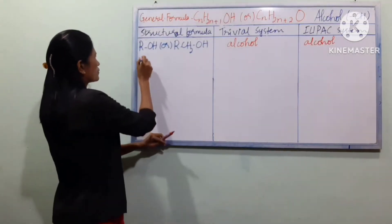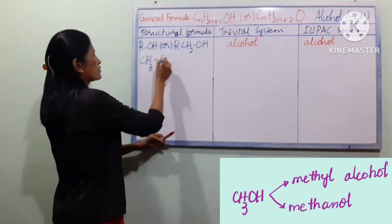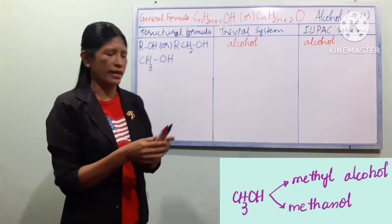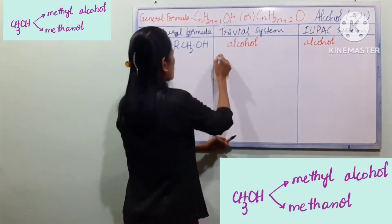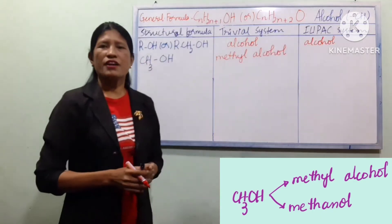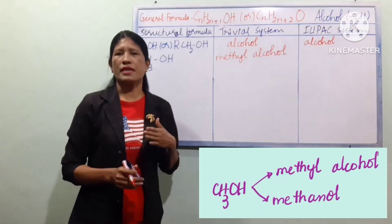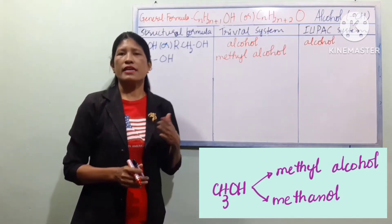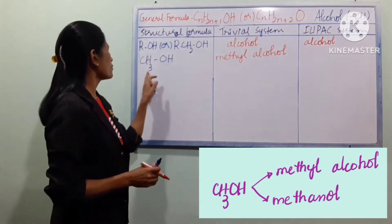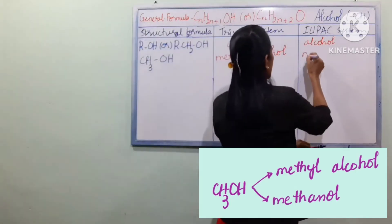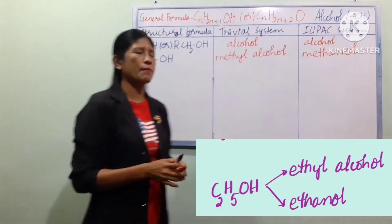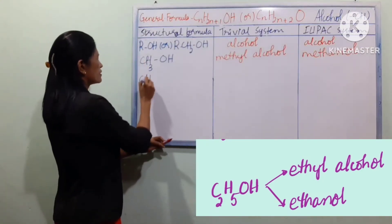In this system, CH3OH is called methyl. CH3OH is the formula and this is called methyl. We use the suffix -ol.